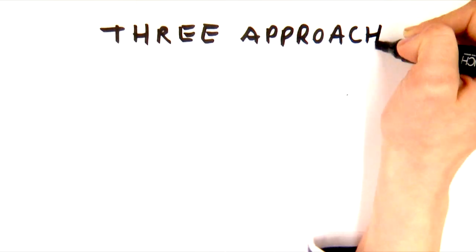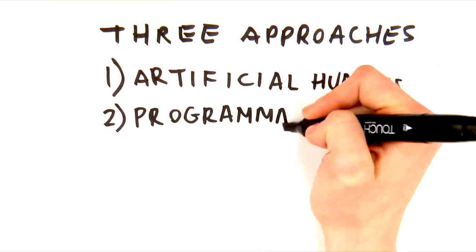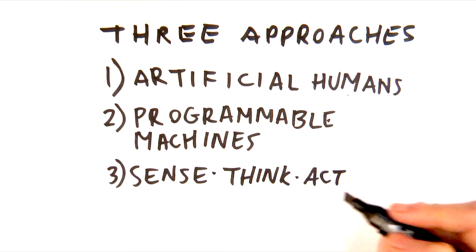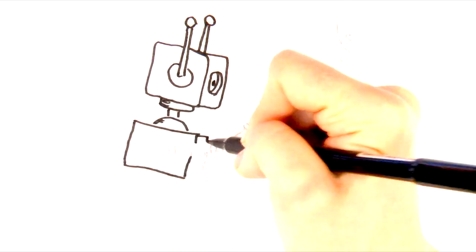In our research, we found three broad approaches that scholars use to define robots. None of these approaches offers a definition that works for all of the ways we already use the word. But they're a start. The first way that scholars define robots is that they are artificial humans.